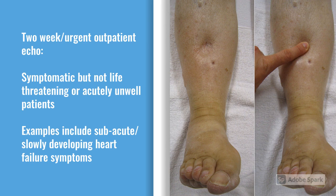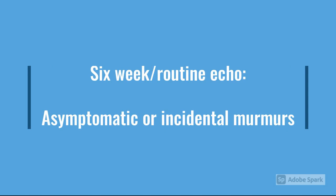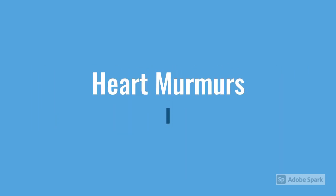The six-week routine echo is to rule out anything sinister — you've found a murmur in a well patient and almost weren't expecting to find it. A lot of times it's an incidental murmur. In general practice, it might be that you're examining the patient's chest for some other reason and you happen to find this murmur.